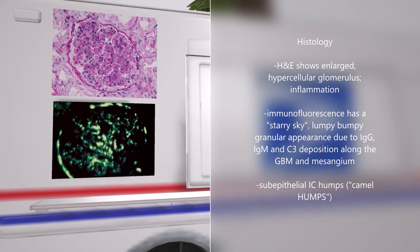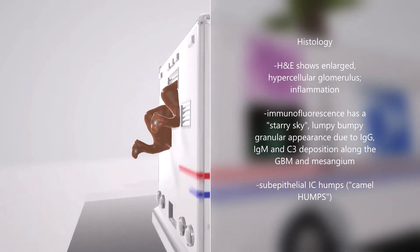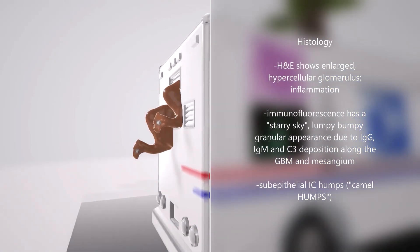The immunofluorescence also has what's called a lumpy bumpy look, due to IgG, IgM, and C3. This happens because the deposition makes its way to the sub-epithelium and then dissipates, creating that lumpy bumpy appearance visible on immunofluorescence. Electron microscopy will also show the sub-epithelial immune complex humps — that's why we have camels with their humps sticking out of the back of the van, to help remember the immune complex humps.